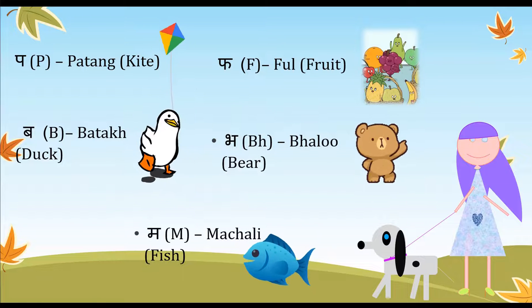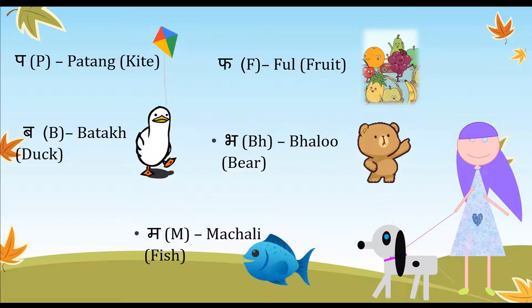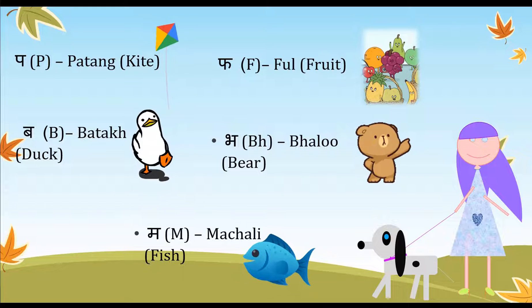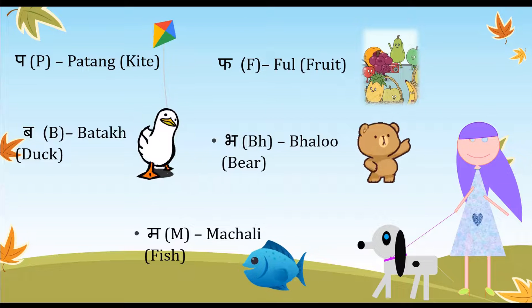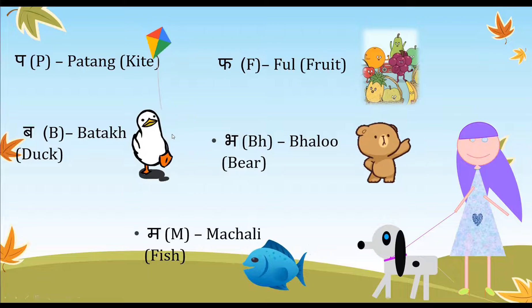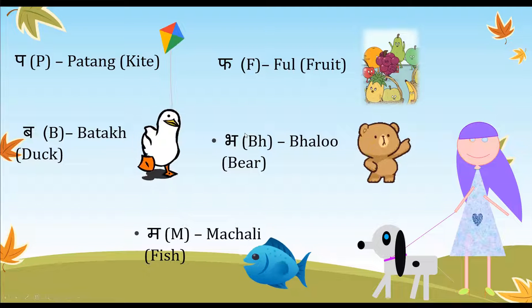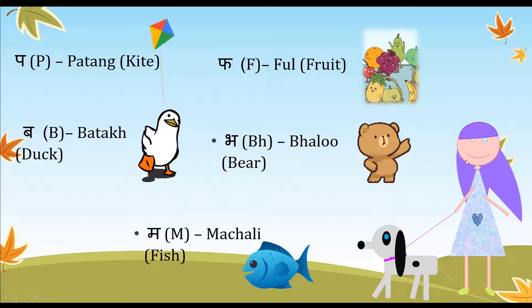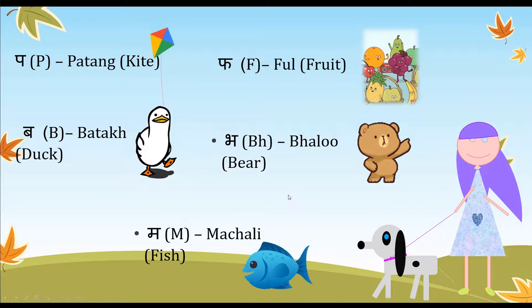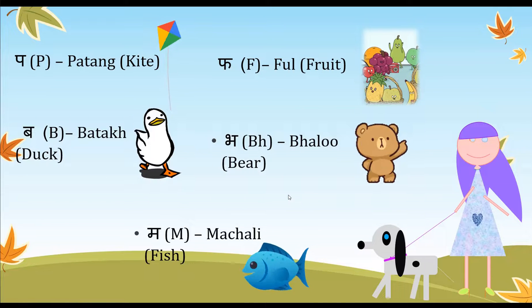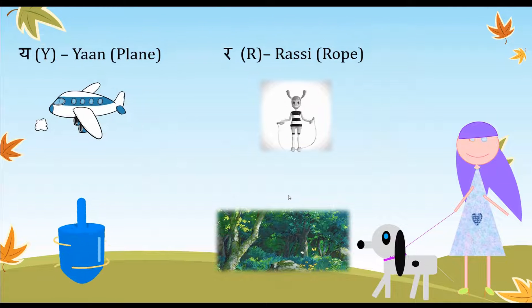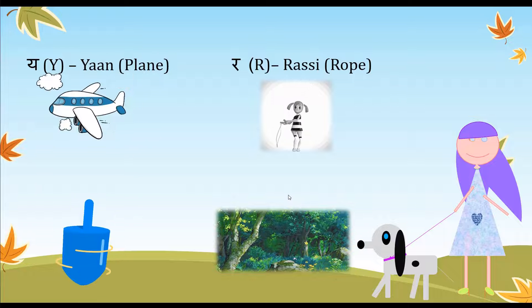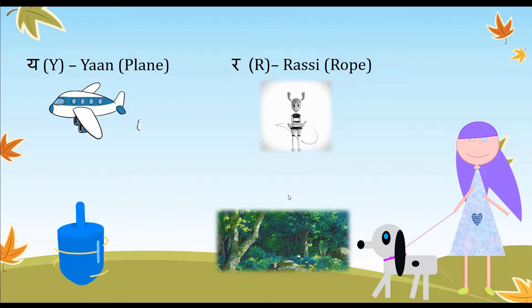Then 'bha' — 'bhalu' which is bear. I'm sure you guys have watched the Jungle Book — my little one just reminded me of the name! Then we have 'ma' — 'machli' which is fish; and 'ya' — 'yaana' which is a plane.